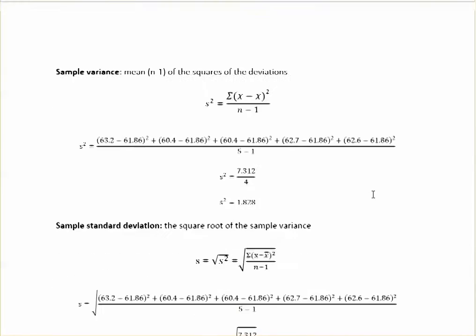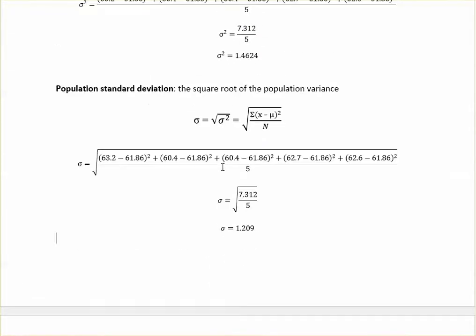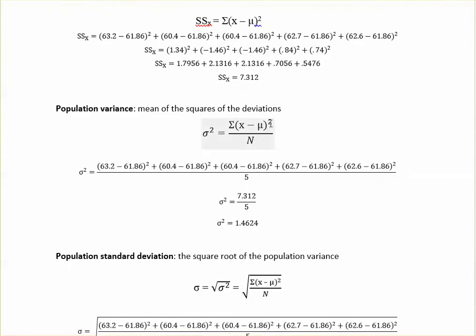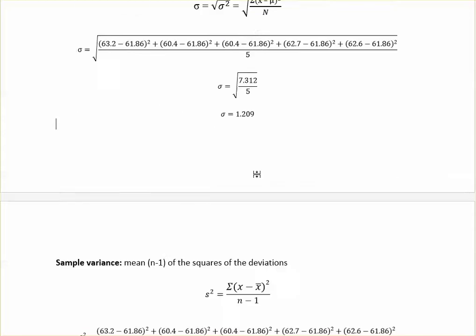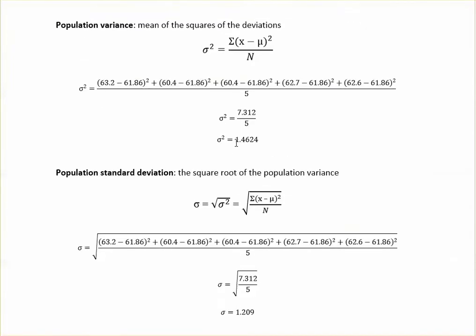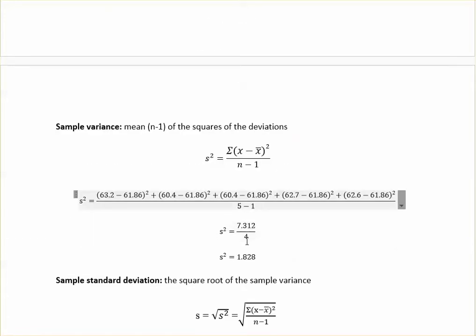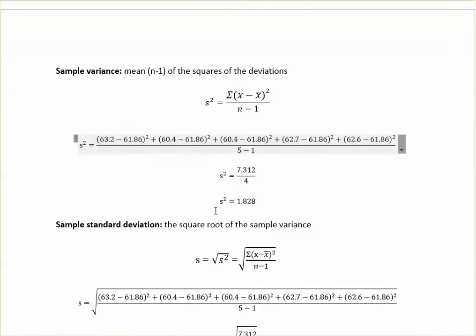So moving along, what about your sample variance or your sample standard deviation? Well, for this one, even though the numbers look different, you're still doing the same thing as you did before, except this time you're doing n minus 1 other than just n. So if you come back up and see here, you've got basically the same formula, just with n for this one, it's n minus 1. So you could do all of this out, or you could just take that 7.312 from up here, 7.312, and divide it by n minus 1, which 5 minus 1 is 4, to get your sample variance, which is just s squared, as 1.828.